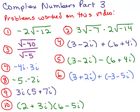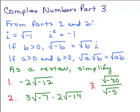Below are the 10 problems that will be worked on in this video. This is Part 3 of complex numbers, so remember from Parts 1 and 2 we defined i as the square root of negative 1 — that's the imaginary unit. i squared equals negative 1. If we have the square root of a negative number, we rewrite it as the square root of the positive number times i. This is a review of multiplying square roots, and whatever's under the square root must be positive. In this video we're going to continue by adding, subtracting, and multiplying complex numbers.